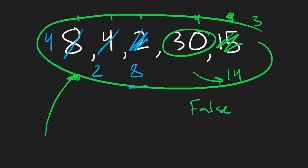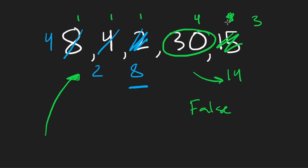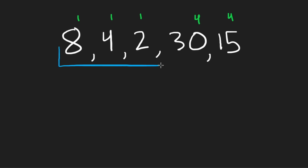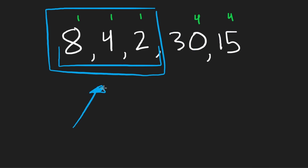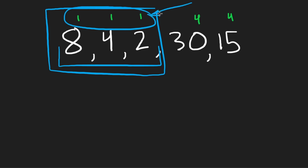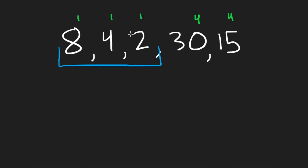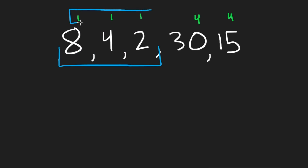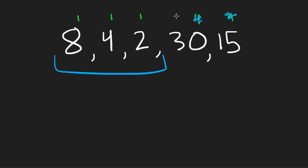When you think about the problem more carefully, consider a block of continuous elements that all have the same number of one bits set. Because we can only do adjacent swaps, this continuous block can always be sorted internally — it doesn't matter what the actual values are. As long as they share the same set-bit count, that subarray can be rearranged into sorted order.